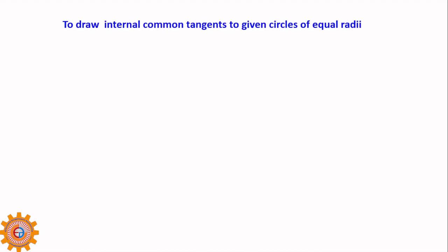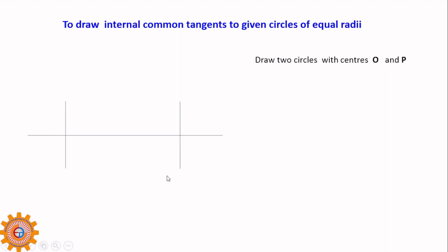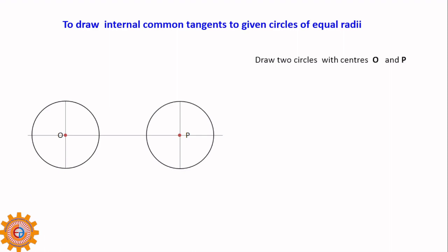The third task is to draw internal common tangents to given circles of equal radii — the circles must be the same size. To draw this, locate two center points O and P by drawing two vertical lines and one horizontal line. Their intersections give the center points, and the distance between the vertical lines is the center distance. This is circle O and this is circle P.